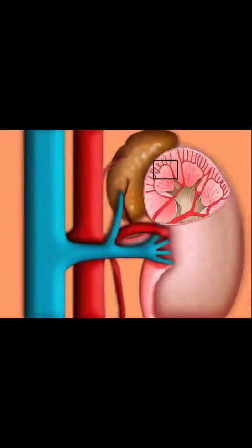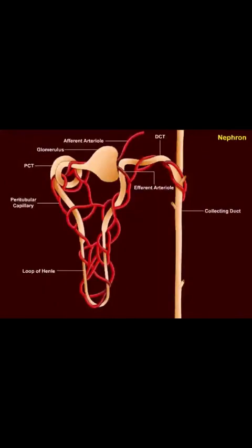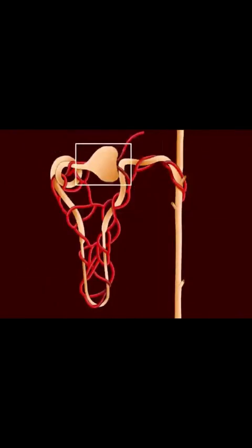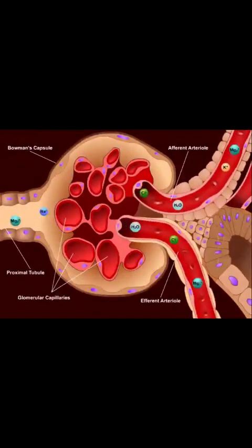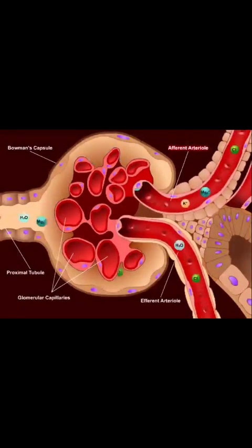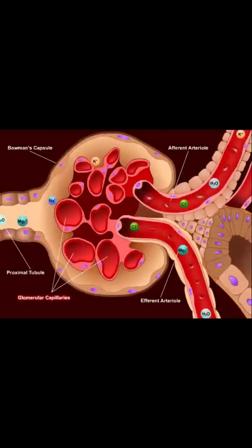We will now zoom in on the nephron, the functional unit of the kidney, and focus in on the glomerulus. In normal glomerular filtration, blood flows from the renal artery to afferent arterioles. It then travels through glomerular capillaries, where filtration occurs.